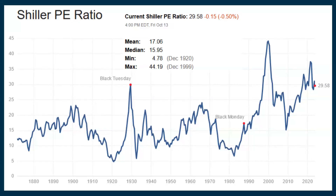We also look at the Shiller P/E ratio, also called CAPE, which averages over a period of time. The current reading is 29.58; the median and mean historically has been between 16 and 17. So we're almost double the historical median. Compared to Black Tuesday in 1929 and Black Monday in 1987, this chart also suggests we're overvalued — and we've been overvalued for quite a while.